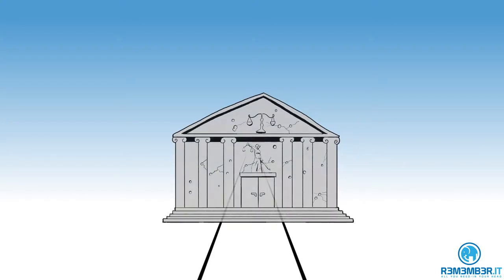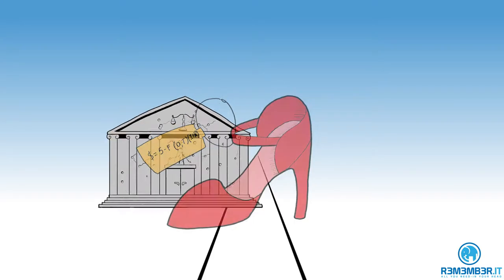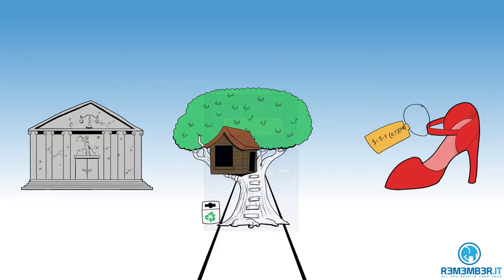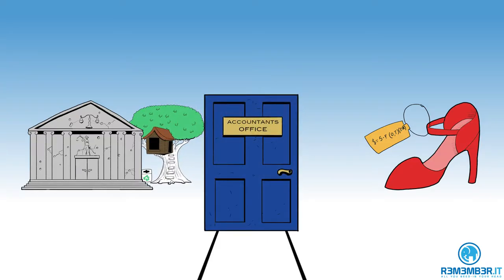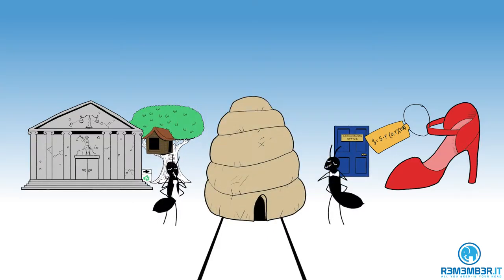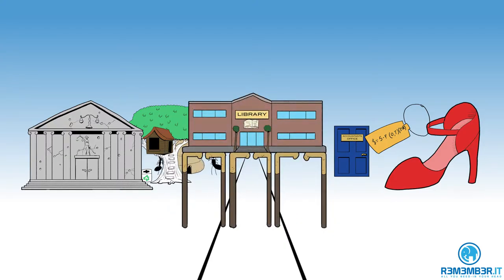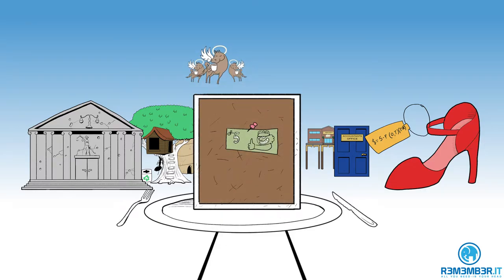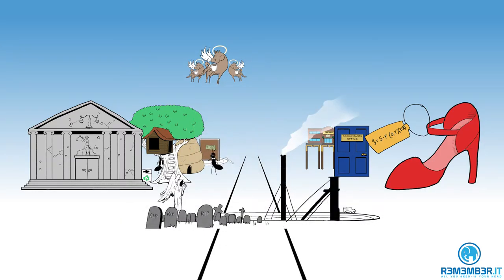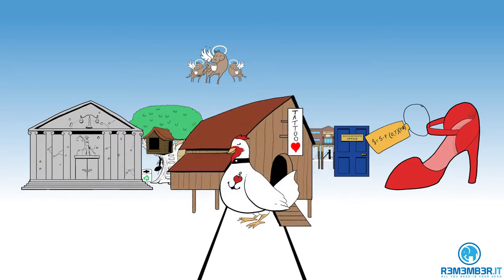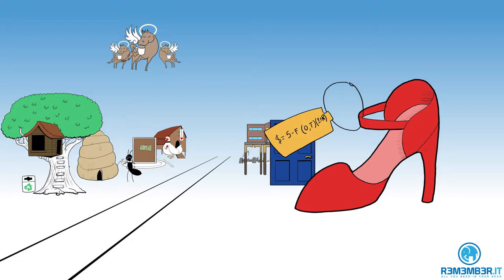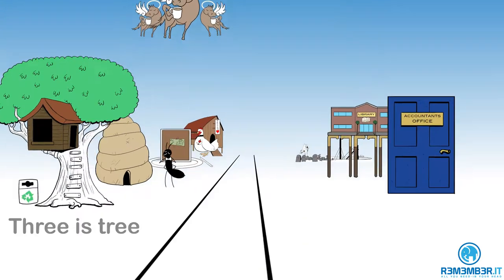Each of the locations is associated with a specific element of the syllabus. As you explore these locations, you'll meet characters and witness stories that will enable you to commit the CFA Level 1 content to your long-term memory. Each location is associated with an image that helps you place it in the right 1-to-10 order, done by a rhyming connection. So the first location is associated with an image linked to a gun, which rhymes with 1.